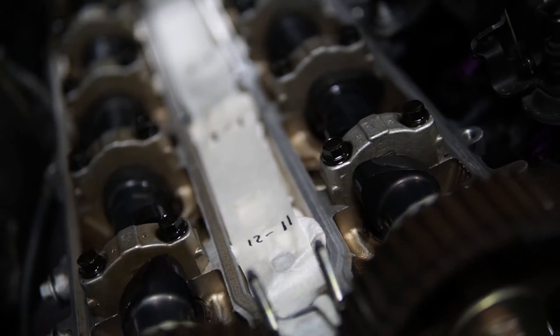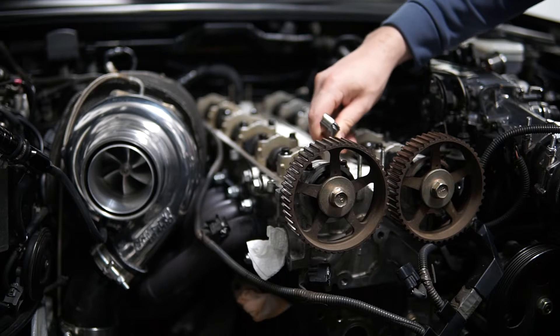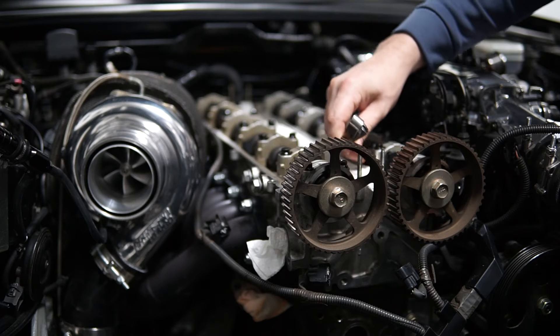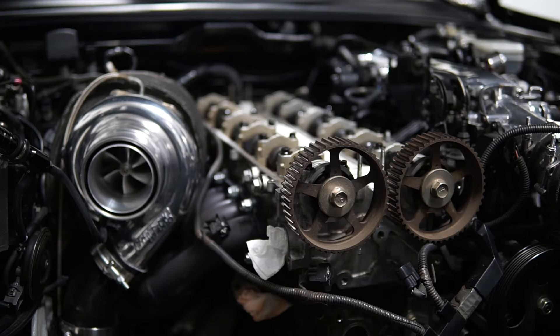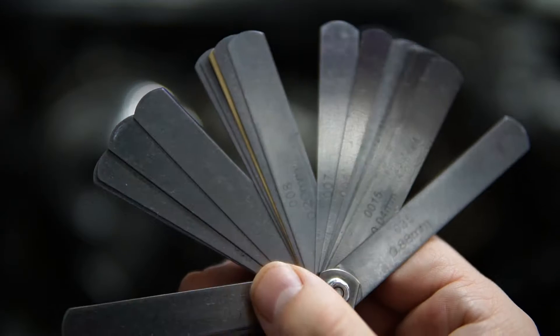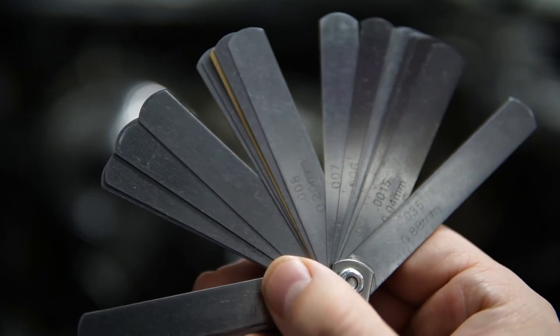As part of a routine valve adjustment or more likely a result of an aftermarket camshaft and valve spring install, you will need to adjust the valve clearance to be within specification. This would either be within OEM spec or the aftermarket camshaft manufacturer's spec. You'll need a few tools to properly complete this: a set of feeler gauges, and either a micrometer or a caliper.